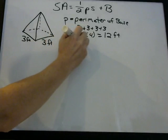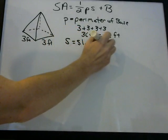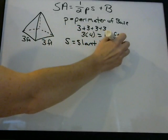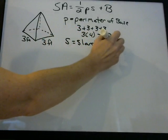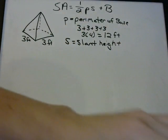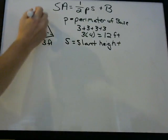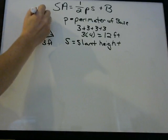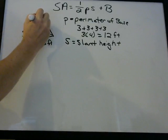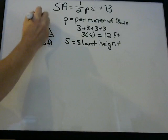S is slant height. It's important to know this because they may try to trick you here. There is a height of the pyramid, and the height goes from the top straight down to the middle of the base.